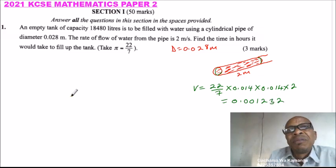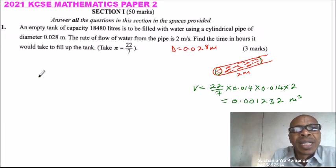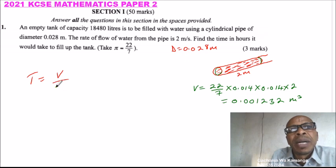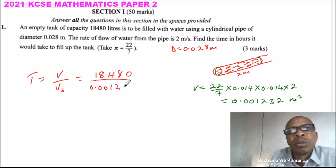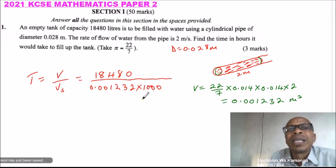So that is the volume, and this is in meters cubed. The total volume is 18,480. Time equals total volume divided by volume per second. This equals 18,480 divided by 0.001232. But because this is in meters cubed and this is in liters, we multiply by 1,000 to make them liters.